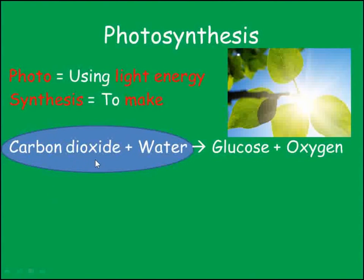The word equation for photosynthesis is: carbon dioxide plus water goes to make glucose plus oxygen. Photosynthesis requires light energy — the word means making using light. It's interesting to note that it's exactly the opposite of the word equation which summarises aerobic respiration.